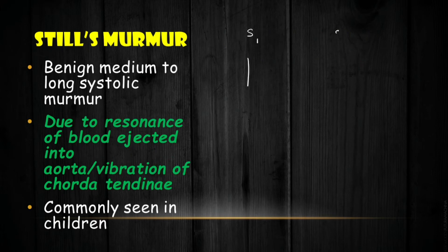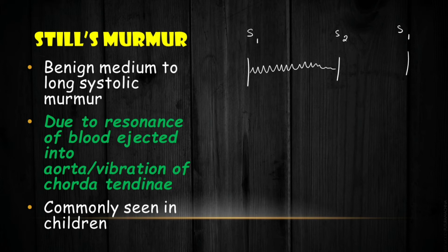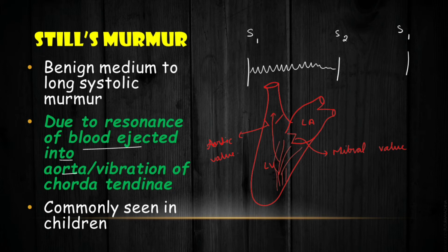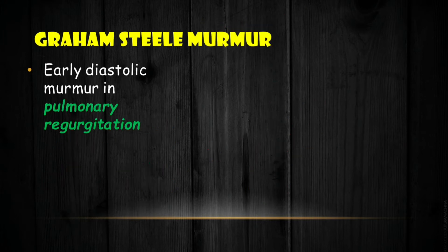Still's murmur is a systolic murmur that is benign and extends from medium to long in the systolic phase. It is mainly due to the resonance of blood ejected into the aorta or the vibration of the chordae tendineae — the thread-like structures supporting the mitral and tricuspid valves and connecting with the papillary muscles. This murmur is commonly seen in children and is also called an innocent murmur.